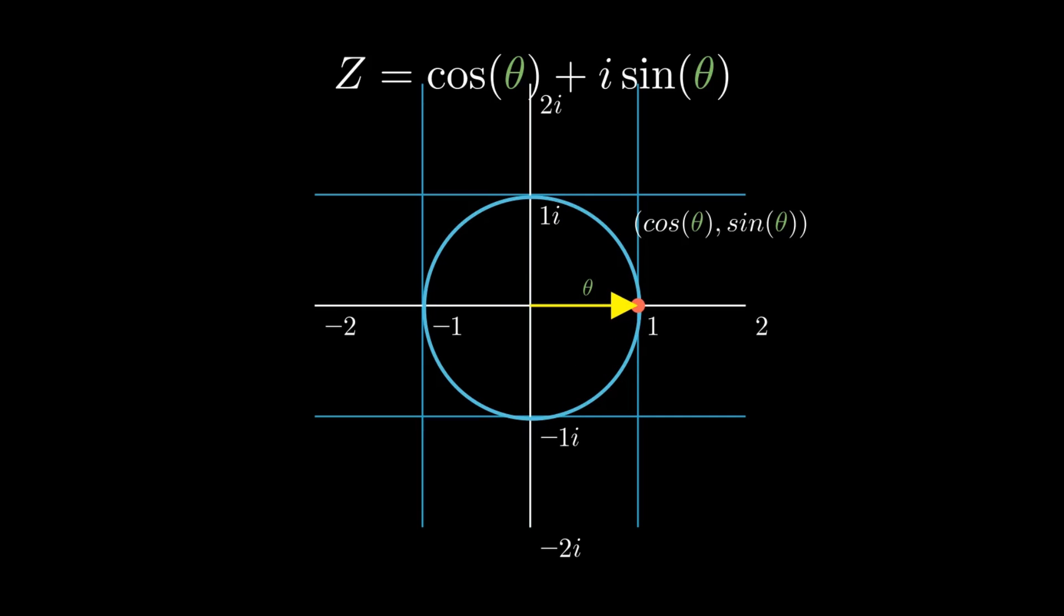According to Euler's formula, the same point can also be represented in exponential form, e to the i theta. It turns out that representing it in exponential form makes it easier to work with complex numbers.